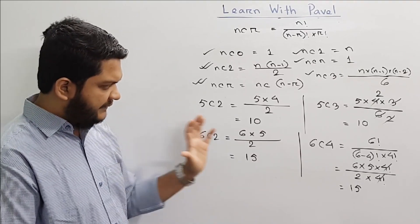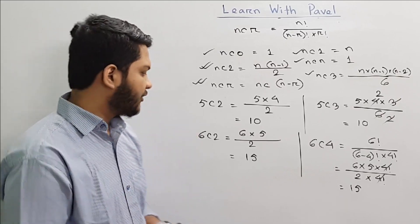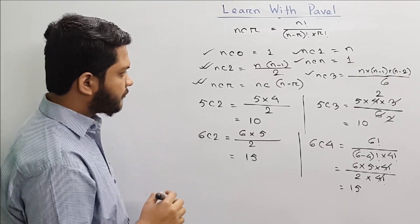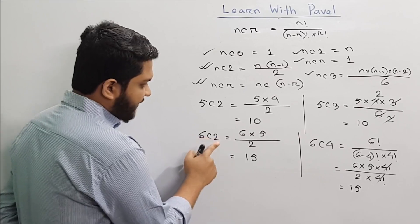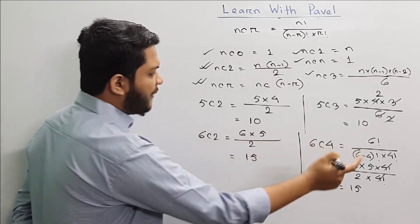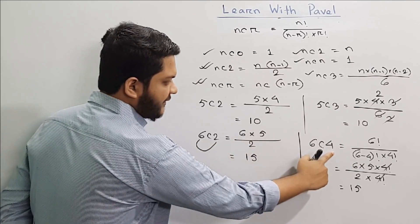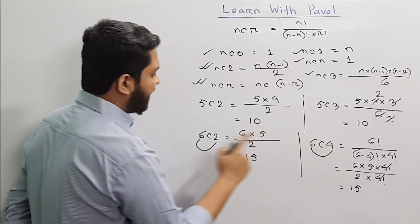When we see this similarity, we can see that this similarity is equal to 6. 6C2 is equal to 6C4, then it is equal to 6.